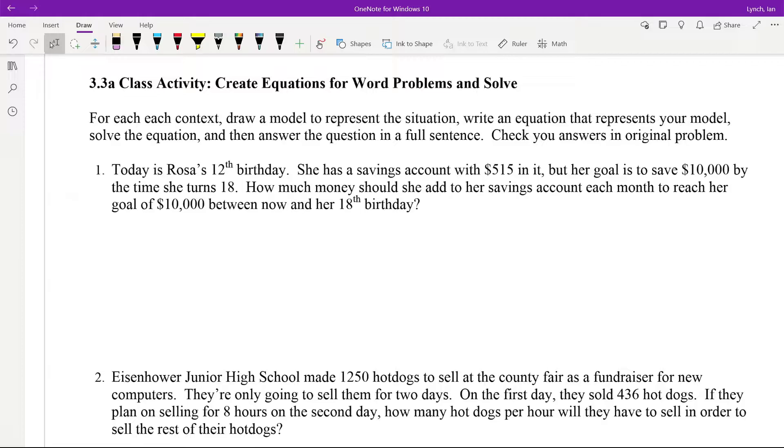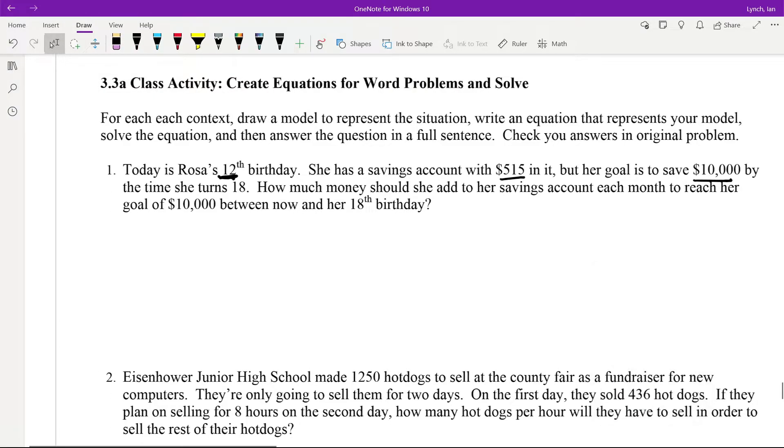So, today is Rosa's 12th birthday, and she has a savings account of $515 in it, but her goal is to save $10,000 by the time she turns 18. How much money should she add to her savings account each month to reach her goal of $10,000 between now and her 18th birthday? Okay, so what we're going to have to do first is figure out the years she has left. So 18 minus 12, that gets us 6 years. Then we multiply that by 12 to find the months, which is 72 months that she needs to be saving.